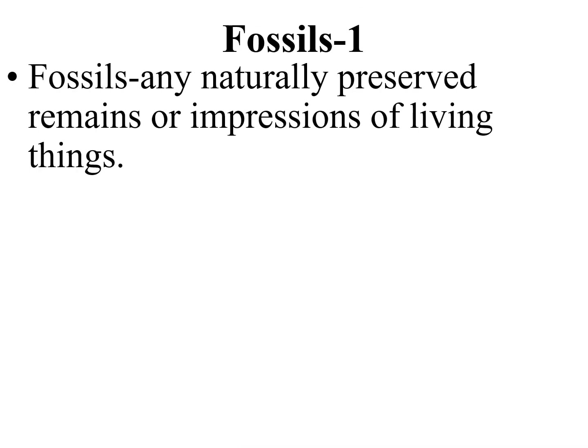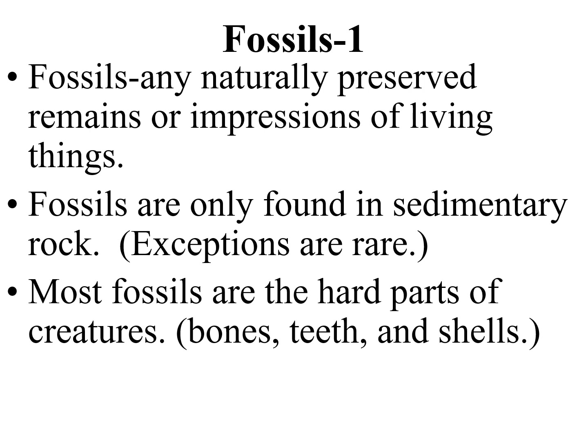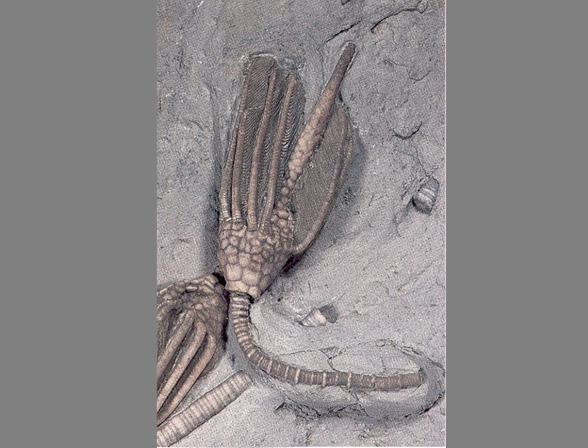A fossil is any naturally preserved remains or impression of a living thing. Fossils in general are only found in sedimentary rock, and in general they are the hard parts of creatures — the bones, the teeth, the shells. Some limestone beds are made entirely of fossil remains. That is a crinoid — the top part looks like a flower, but it's actually a jellyfish-like creature related to coral and jellyfish. It sends its tentacles up to catch little creatures living in the water, on long stems called crinoid stems.